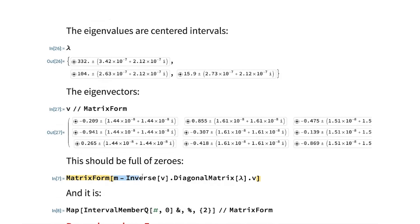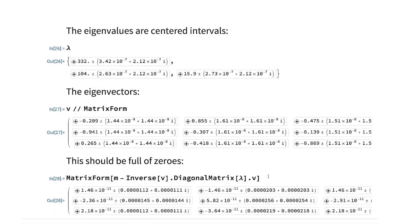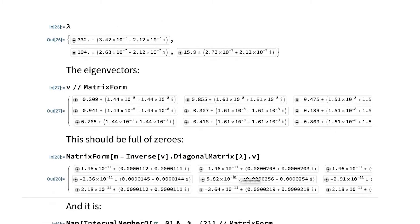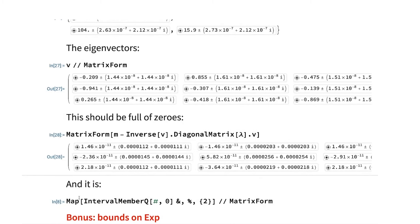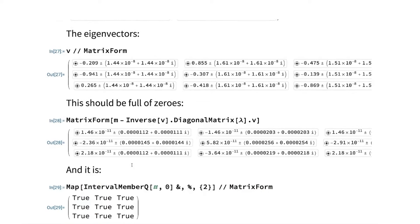Now, we should expect that we still have the similarity relationship. We get this big sort of ugly looking matrix, although it does look like the entries are pretty small. And in fact, if you ask, is zero an element of every single entry in this matrix? Well, the answer is yes.